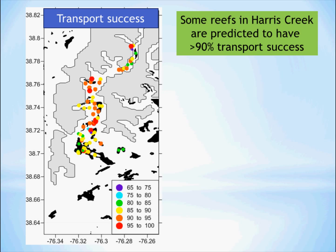It predicts that some of the reefs in the Harris Creek Sanctuary would have greater than 90% transport success. That means that over 90% of the larvae that don't die of other causes are in a position to settle on a reef somewhere in the system.